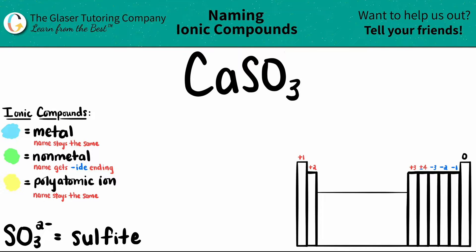So let's identify the polyatomic ion first. These are not going to be found on the periodic table. You have to memorize them. I put the polyatomic that we see in this formula down below.